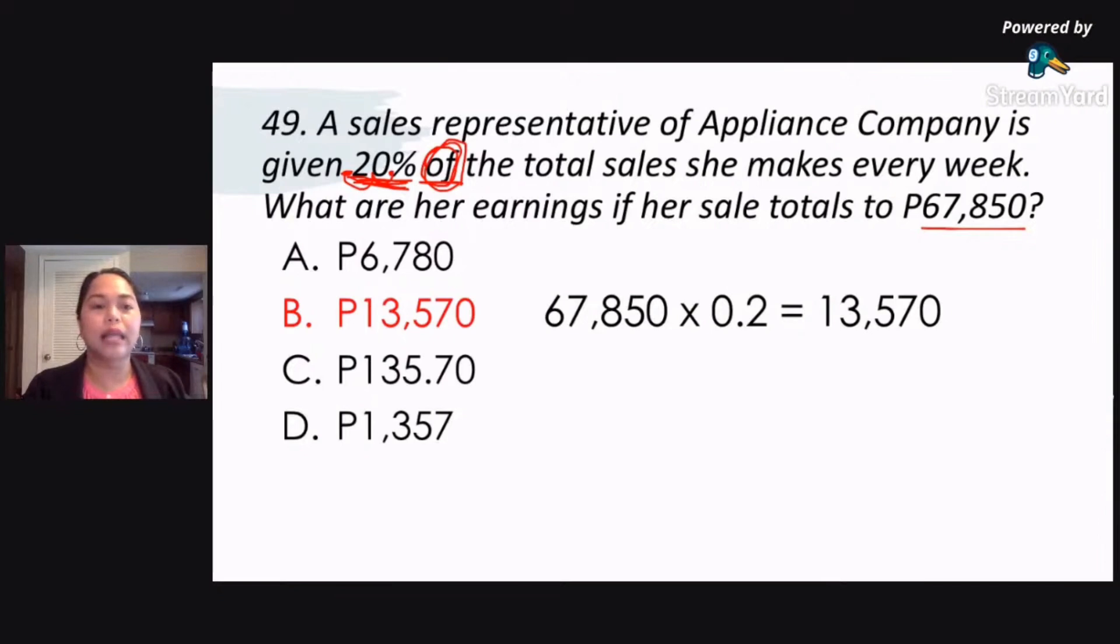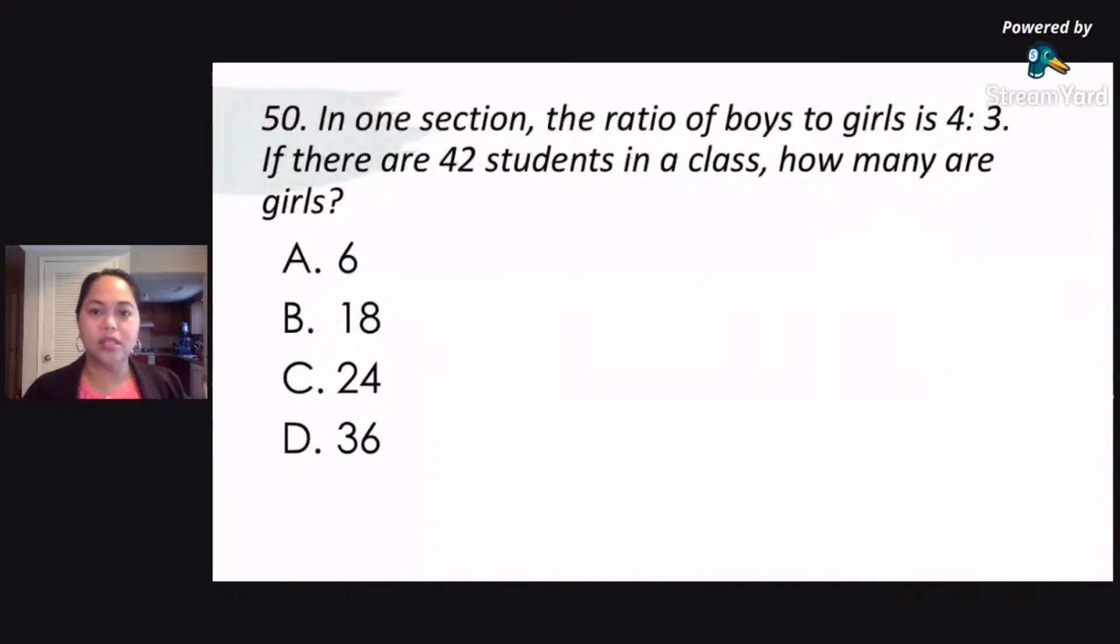Okay, we're down to our last question for Gen Ed. Okay, this is still math. Ang daming math questions in this set. So number 50. If in one section, the ratio of boys to girls is 4 is to 3. If there are 42 students in a class, how many are girls?